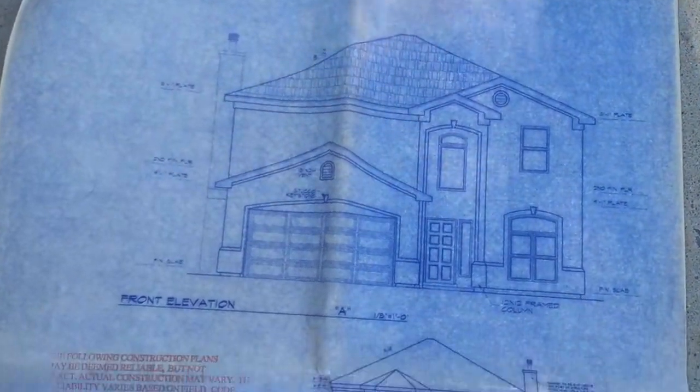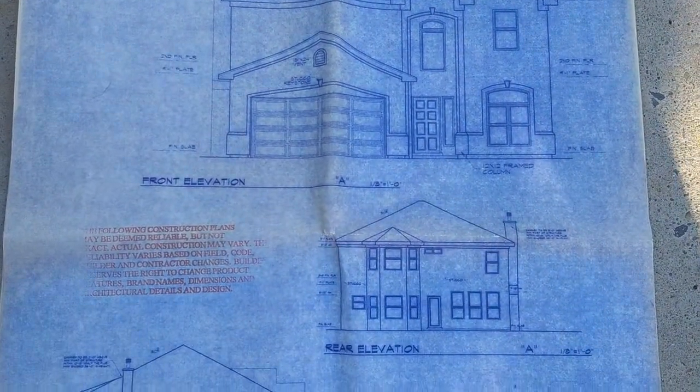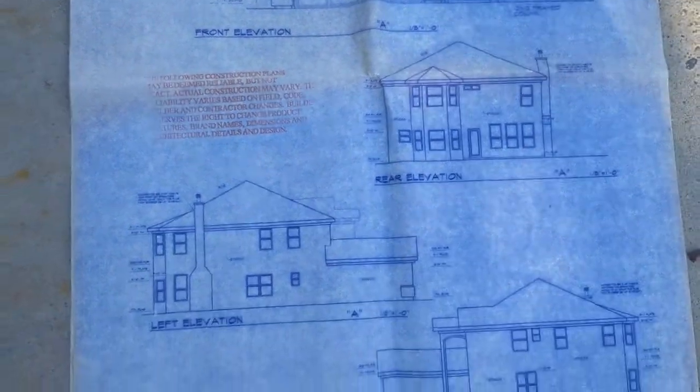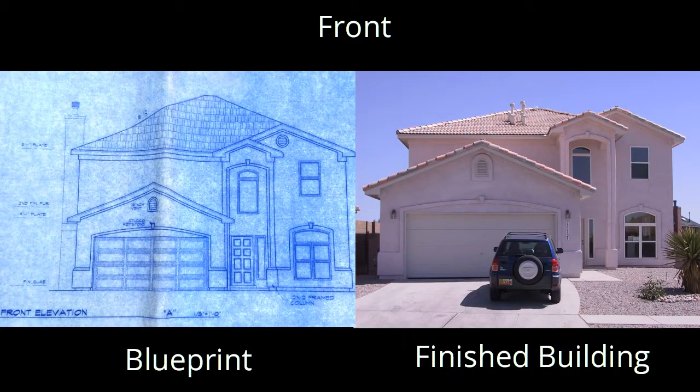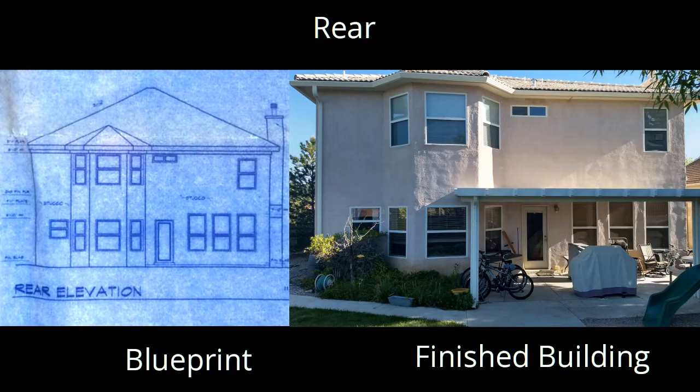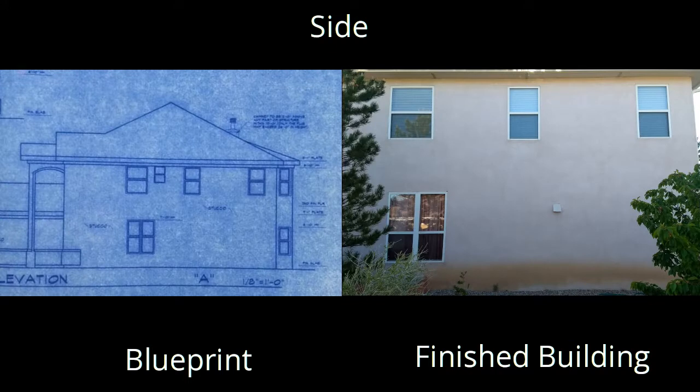Today we're going to talk about blueprints and floor plans. We've talked a little bit about how important it is to plan when you're making a big project, and buildings are some of the biggest projects people can make, so it's important to have a blueprint. These are plans for a building that show where the walls and the doors and the windows will be. They show up from multiple sides, like the front and the back, the left side, and the right side.